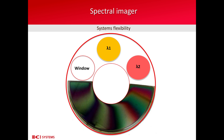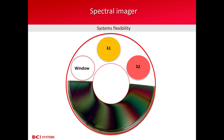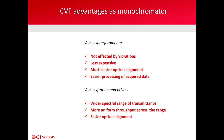The circular variable filter advantages as a monochromator can be summarized in the following list. If we compare a CVF with interferometers, it is not affected by vibrations. It is usually less expensive. It is much easier to align optically in the system. And finally, the data acquired are easier to process.